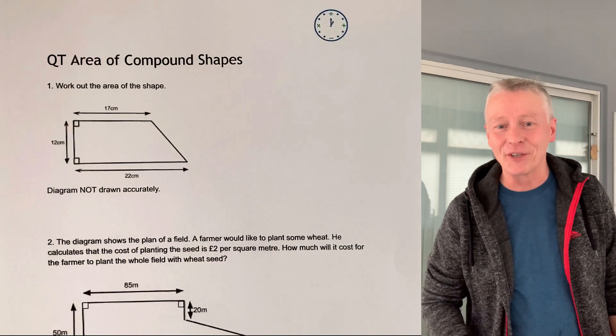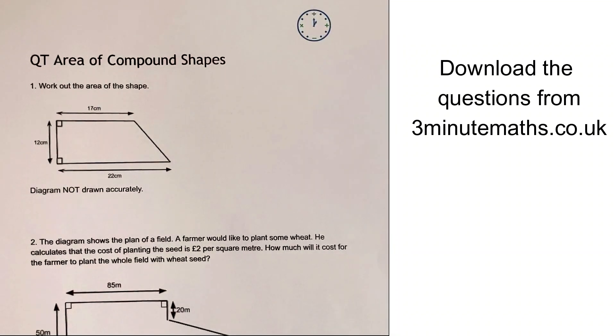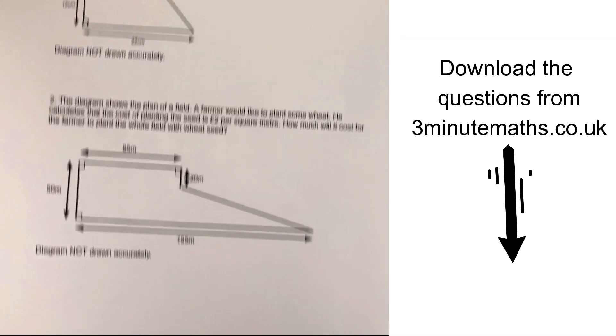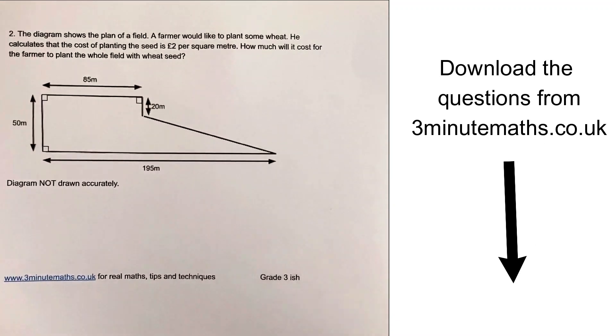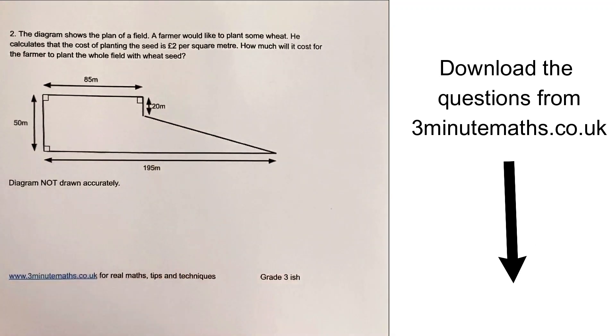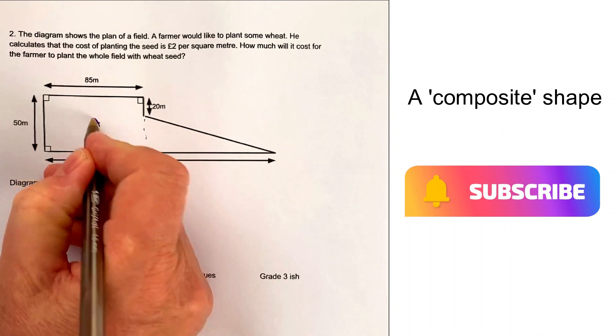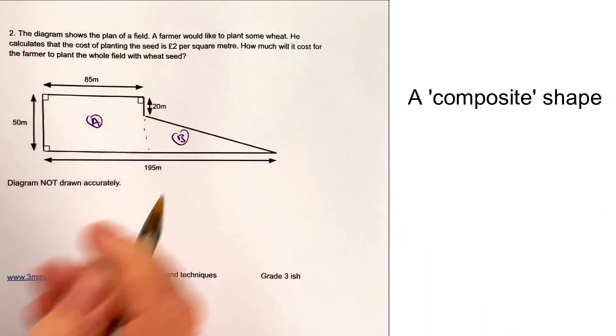Let's have a look at question number two. We've got this shape which is a rectangle and a triangle, so I'm going to split them up into A and B.